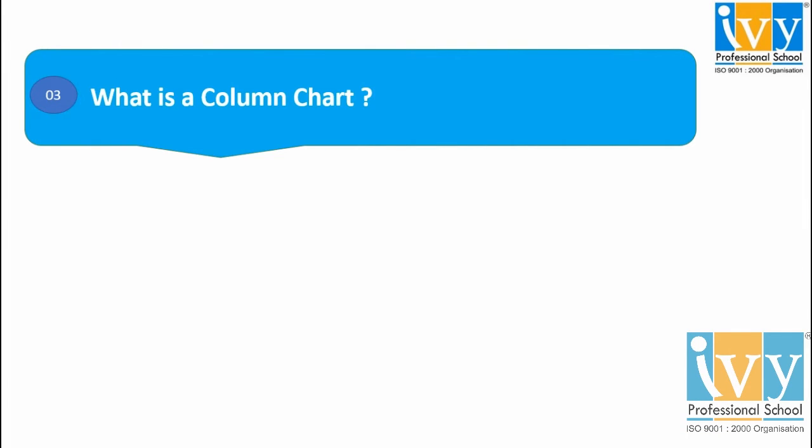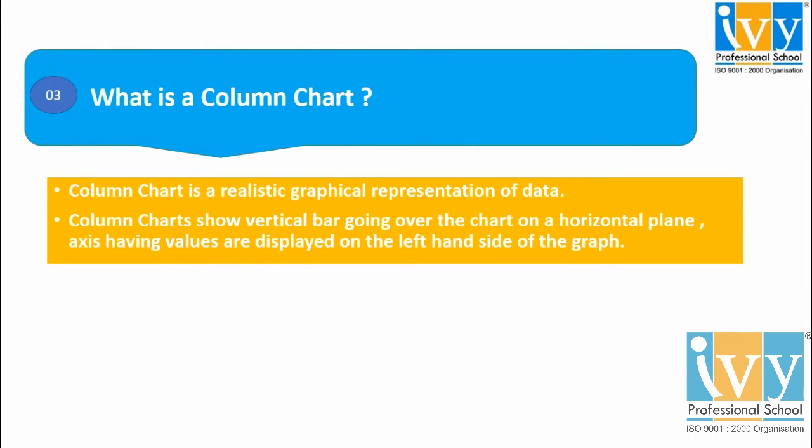Question number 3: What is a column chart? A column chart is a graphical representation of data that shows vertical bars going over the chart on a horizontal plane, with the y-axis values displayed on the left-hand side of the graph.